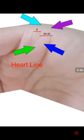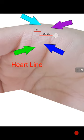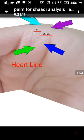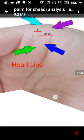This is the heart line. As you can see, her heart line is very long, starting from here and ending here. So she is very, very emotional. And there is much more chance of her love marriage. So it will show her love marriage.